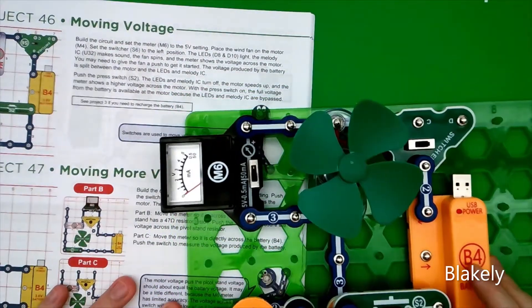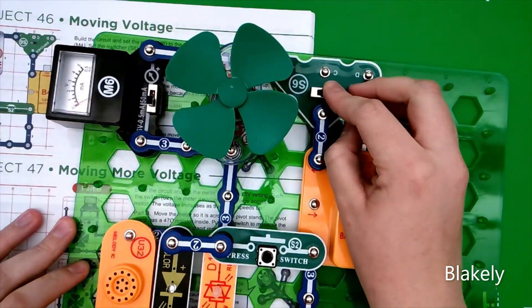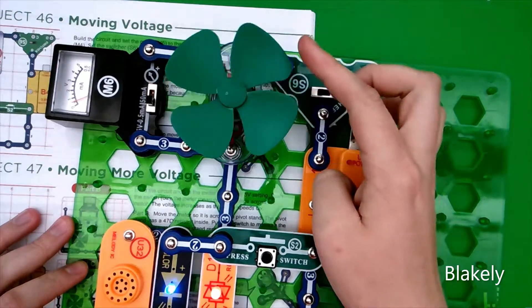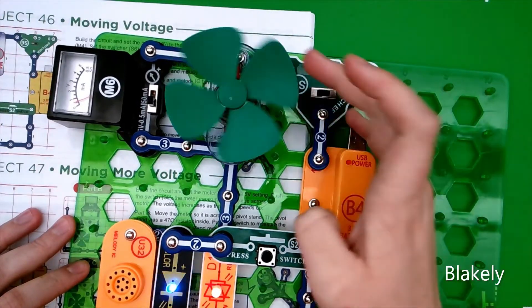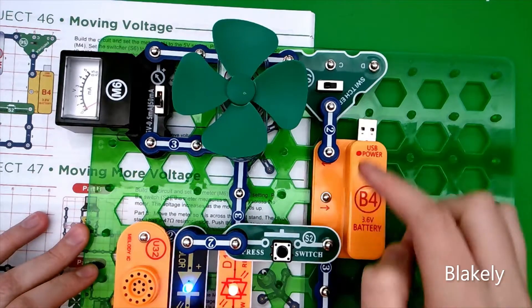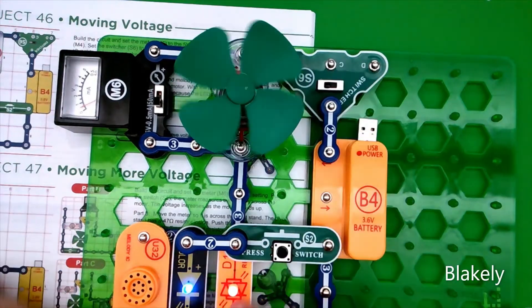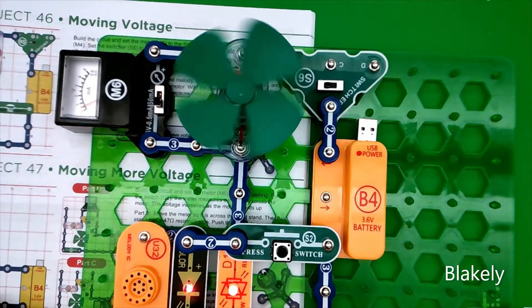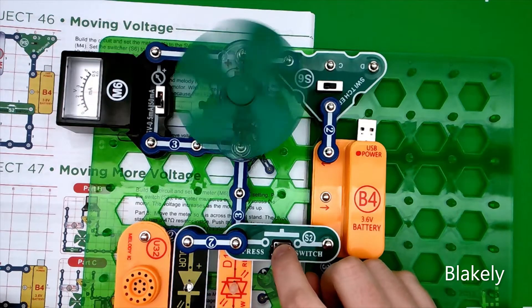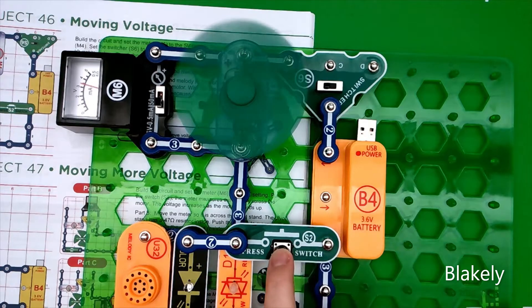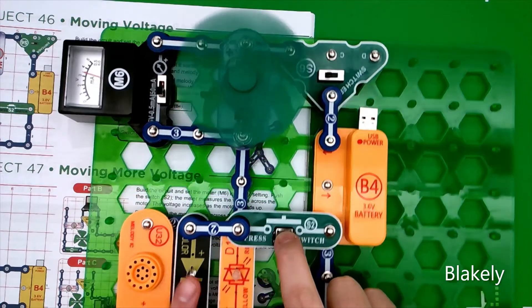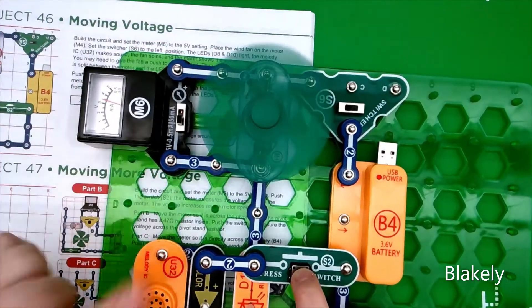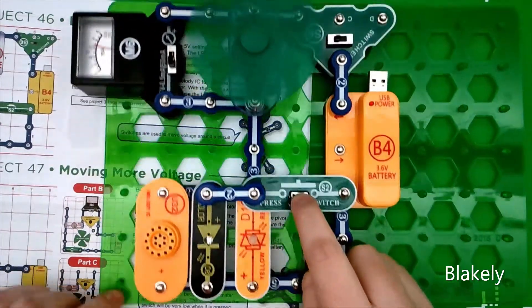On this one, if you click it all the way left, you can see that the fan barely blows with the lights showing up like that. And when you press the S2 it bypasses the lights so it gives more voltage to the fan and the fan goes faster.